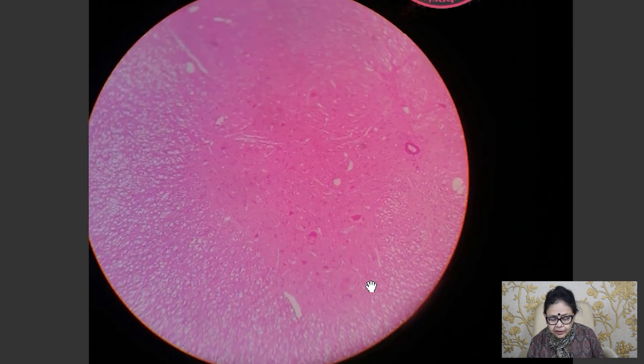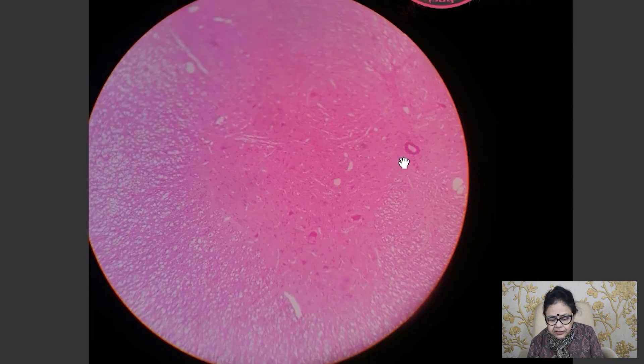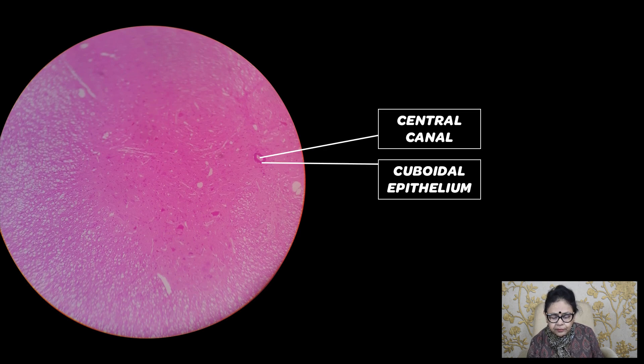This is the white matter. Now, the spinal cord has the central canal and this central canal is lined by cubical epithelium which is known as the ependymal lining.